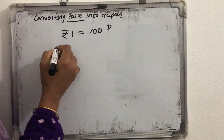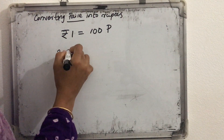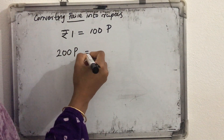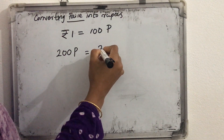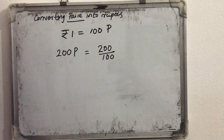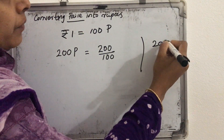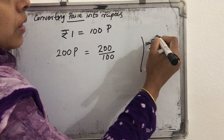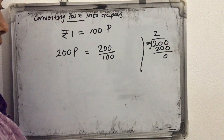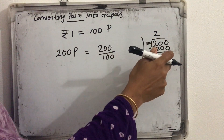For example, if we convert 200 paise into rupees — what are we doing? We are dividing 200 by 100. When we do this division, the quotient we will get is 2. 2 into 100 we will get 200, and the remainder we get is 0. So in this case the quotient will be the rupees and the remainder will be the paise.